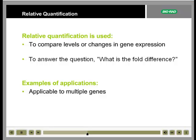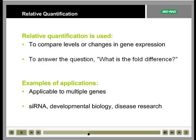Three examples of applications in which relative quantification might play a part are siRNA, or RNAi-induced gene silencing, developmental biology, and disease research.